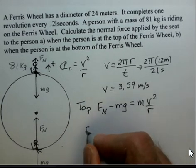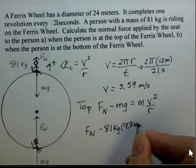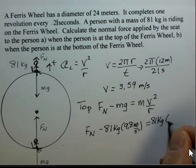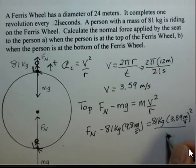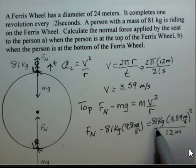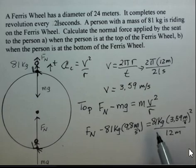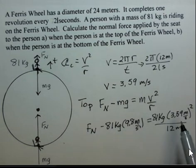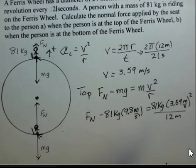So Fn minus 81 kilograms times 9.8 meters per second squared equals 81 kilograms, 3.59 meters per second is our speed, and we have to divide by our radius, 12 meters. Is it allowed to cancel 81 kilograms and 81 kilograms? They appear on both sides. The answer is no. We do not have 81 kilograms on this term. You're only allowed to cancel when you have the same number in all, in this case three terms, but in every term of the equation. So do not cancel the 81 as you do this calculation.